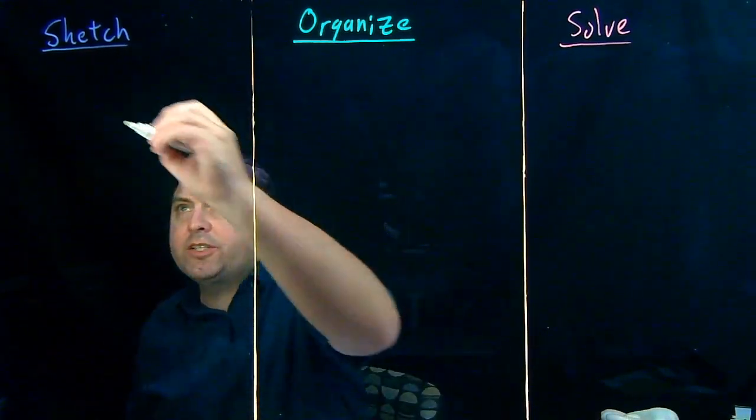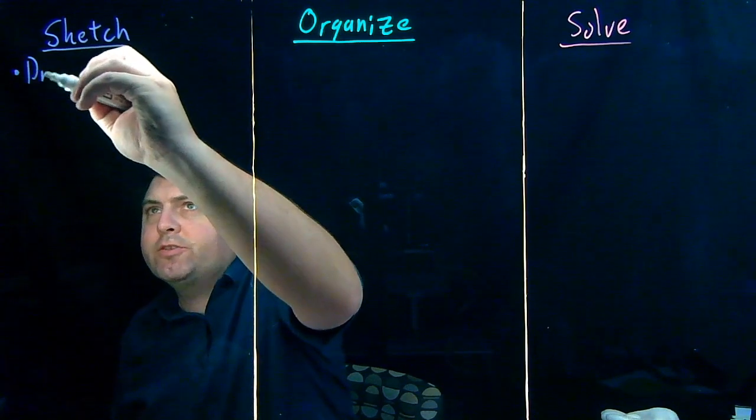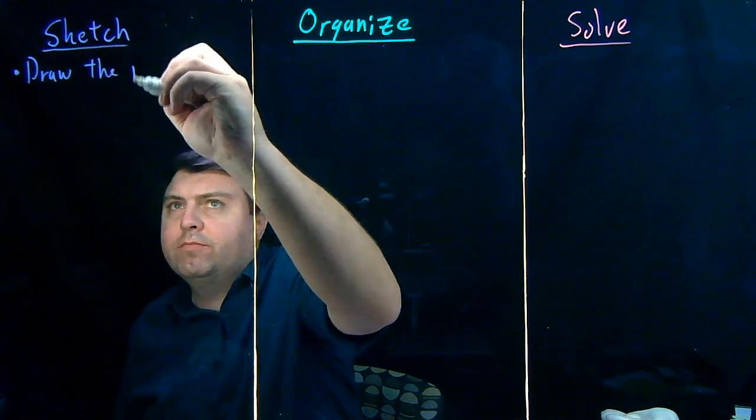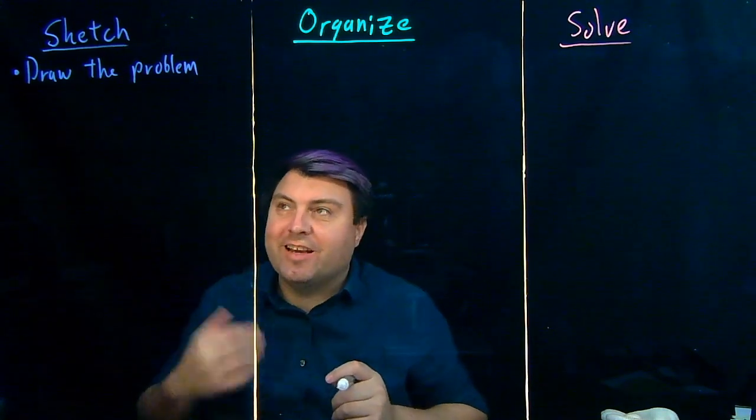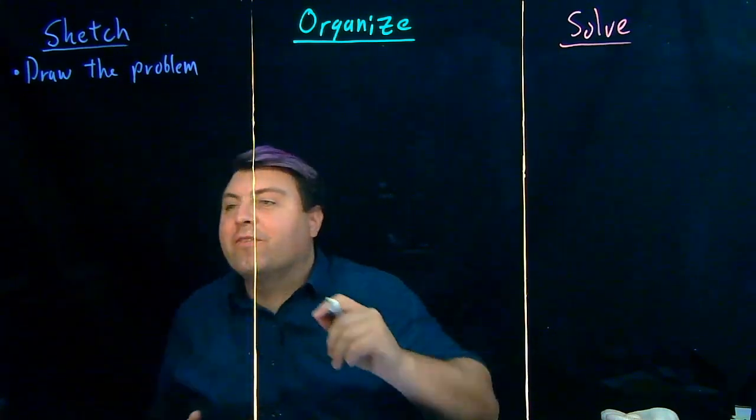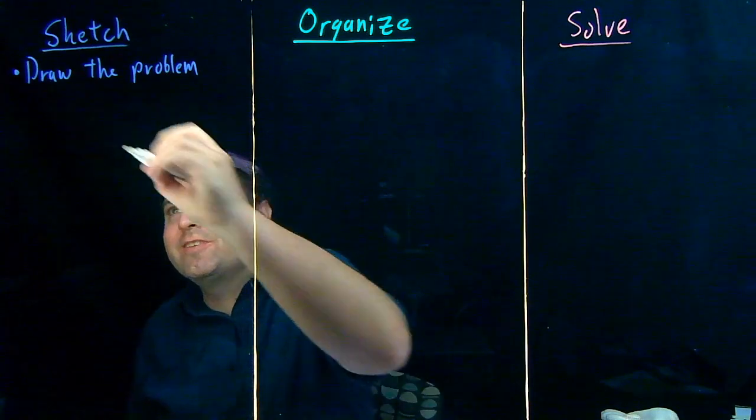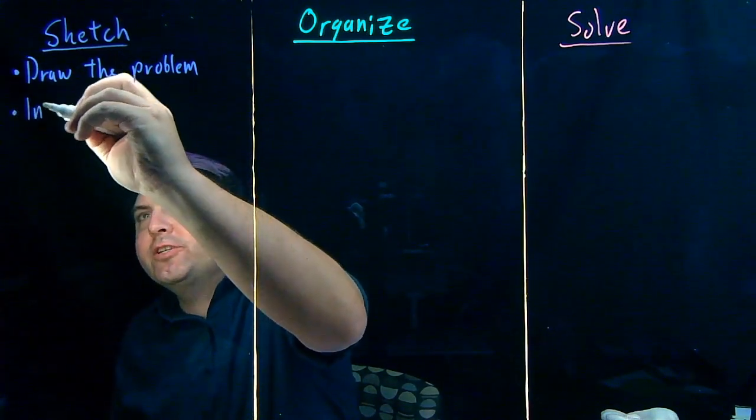We start with our sketch, and we want to always start by just drawing the problem, activating our human minds that know how physics should work, and not just how algebra works. Our next step is getting an interaction diagram going.